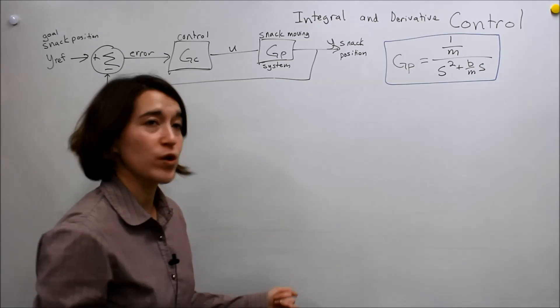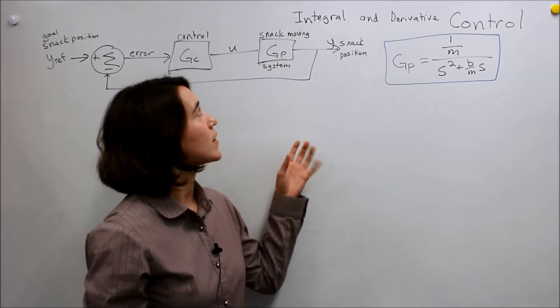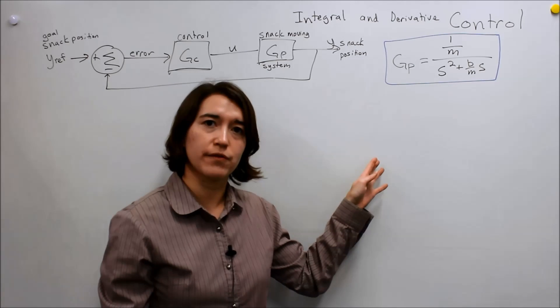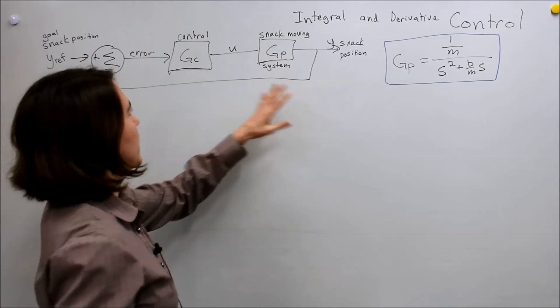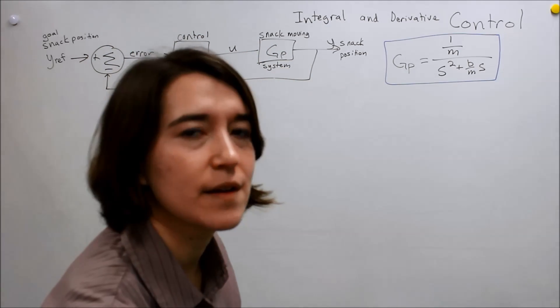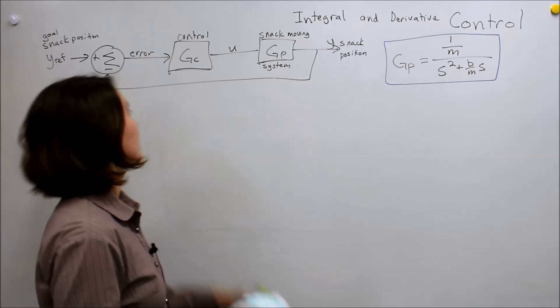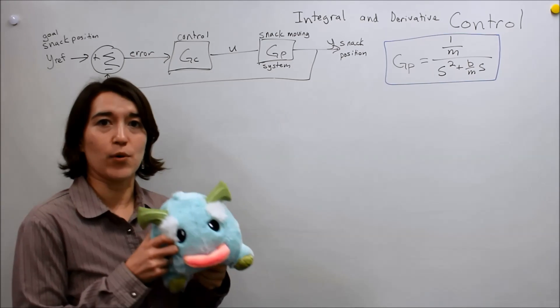We previously talked about proportional control, and now we're going to talk about integral and derivative control. We looked at a system where we had to move the position of a snack to a specific location, Vref, so that a Poro could eat it.